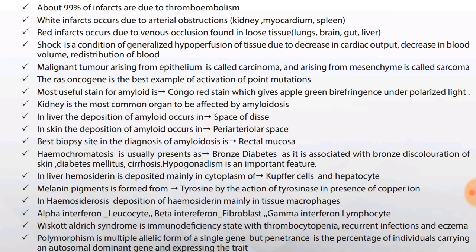RAS oncogene is the best example of activation of point mutations — just remember RAS oncogene is for point mutations. Most useful stain for amyloid is Congo red stain, which gives apple-green birefringence under polarized light. Kidney is the most common organ to be affected by amyloidosis.